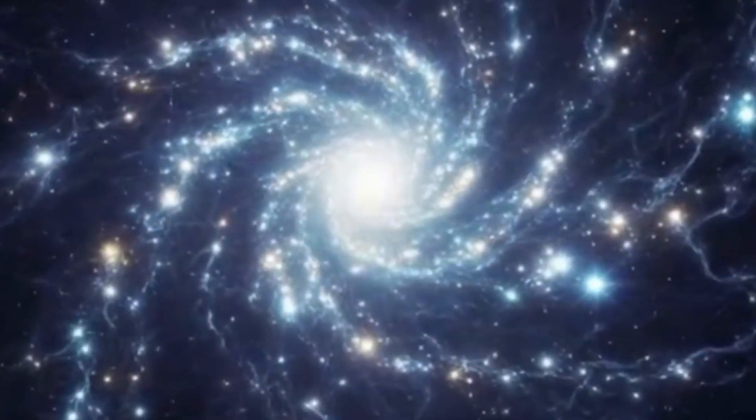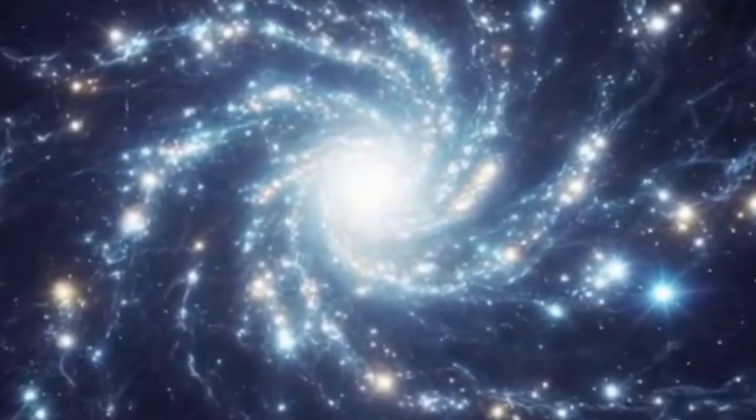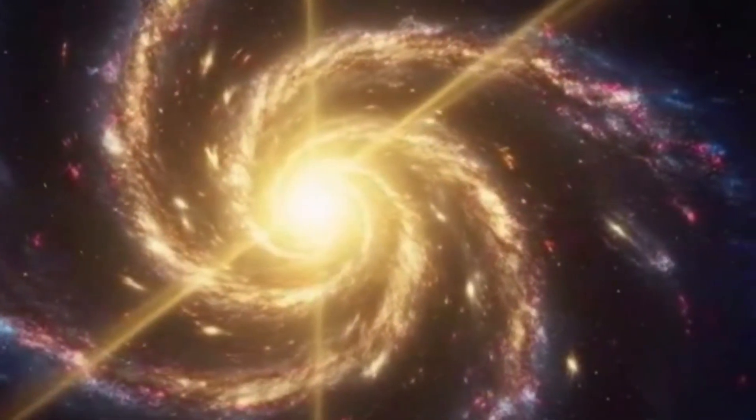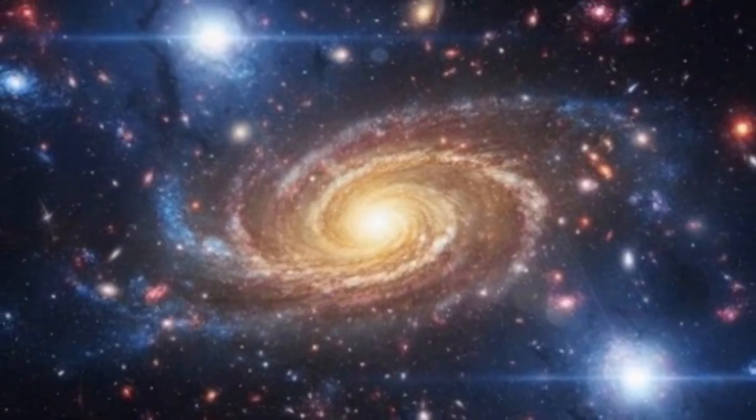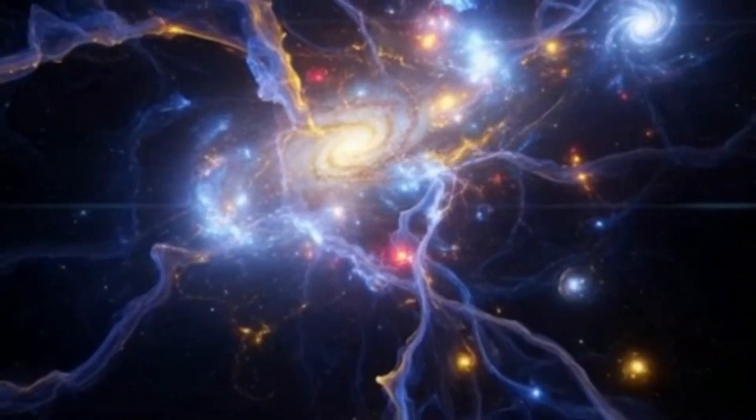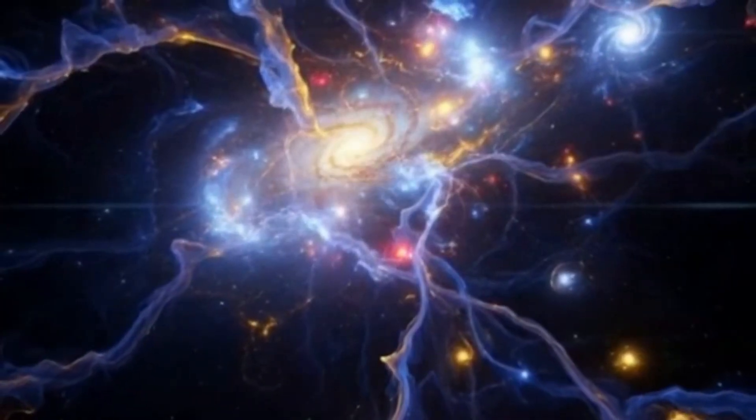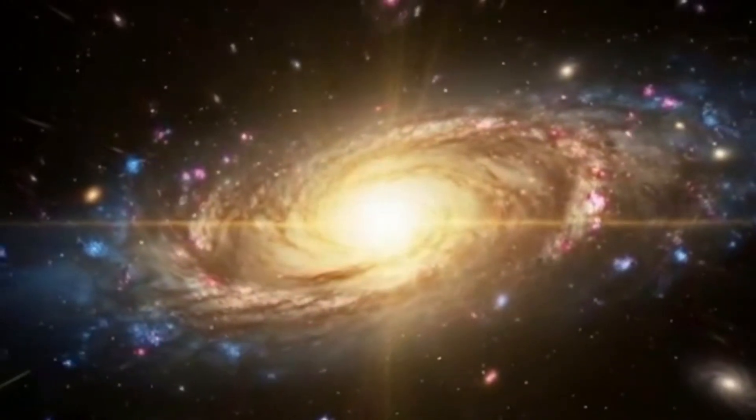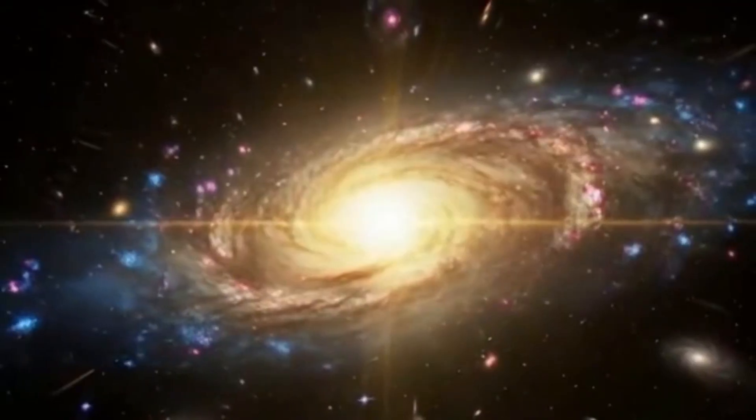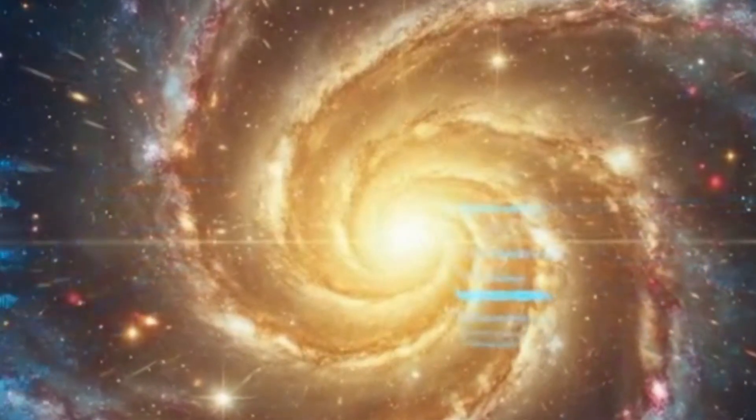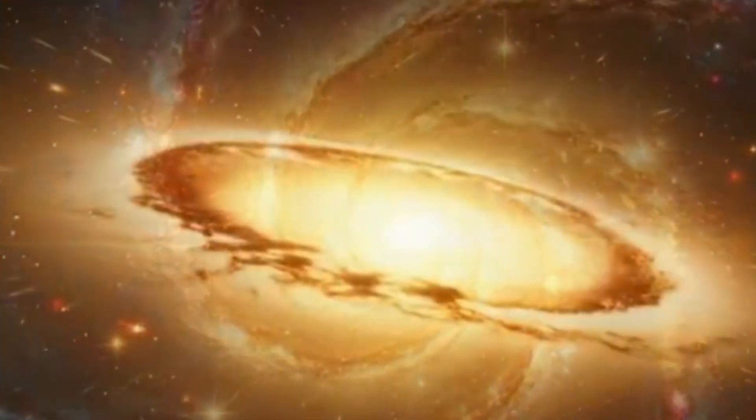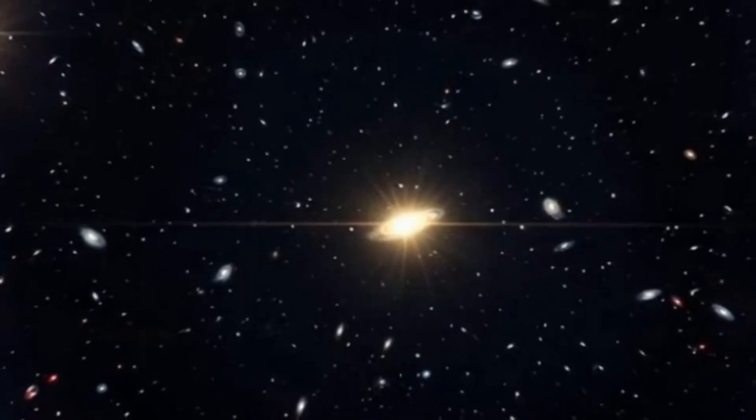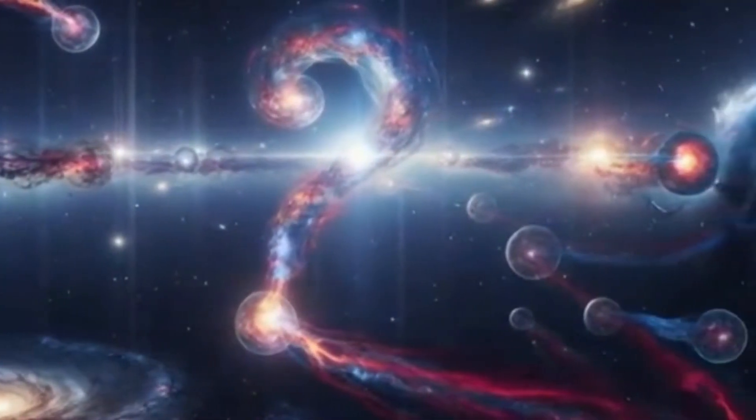If timescape cosmology is correct, then the age of the universe might not be the same everywhere. In the vast cosmic voids, where matter is sparse and gravity is weak, time could be flowing faster, meaning those regions might be older than the denser parts of space filled with galaxies and clusters. And here's where it becomes truly fascinating. Because so much more time has passed in the voids, these regions have undergone greater expansion. In simple terms, space itself has been stretching more in these emptier areas. So, if you were observing an object on the far side of a cosmic void, it would appear to be moving away from you faster than an object on the near side, not because of dark energy, but because the space between you has expanded more quickly over billions of years.